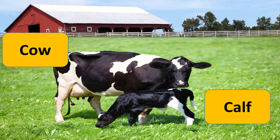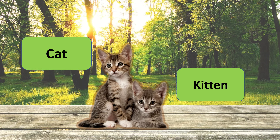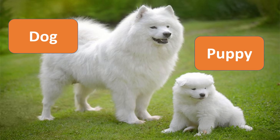This is cow. Baby cow is calf. Cat. Baby cat is called kitten. Dog. Baby dog is called puppy.